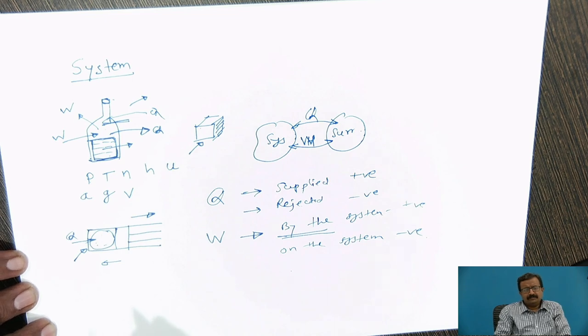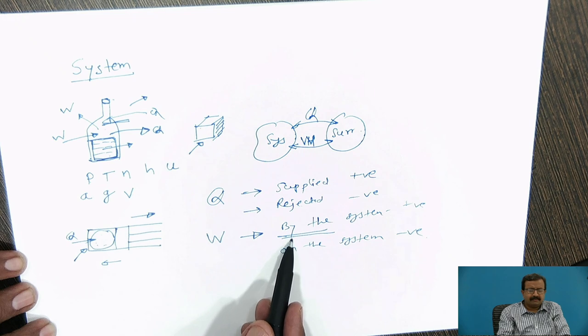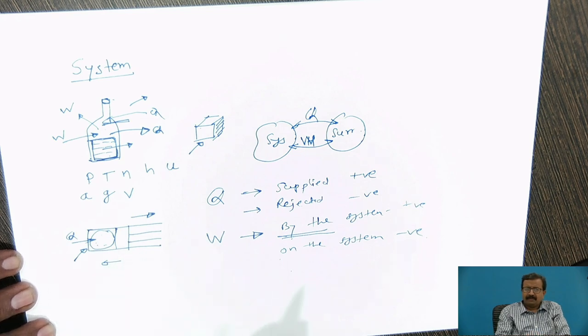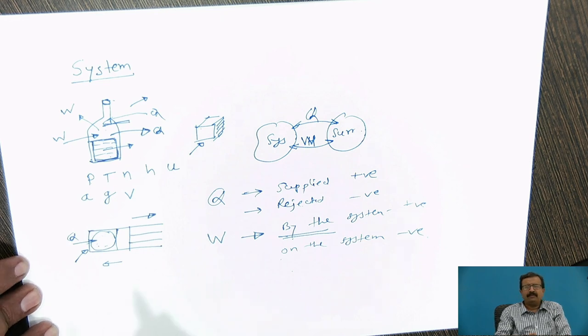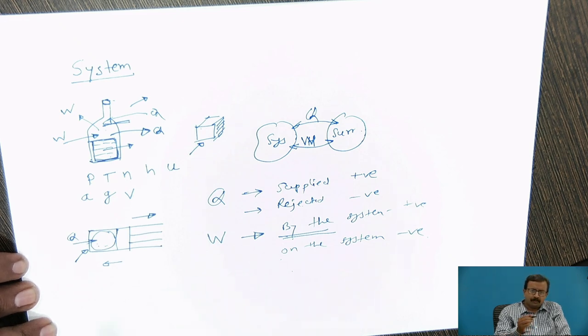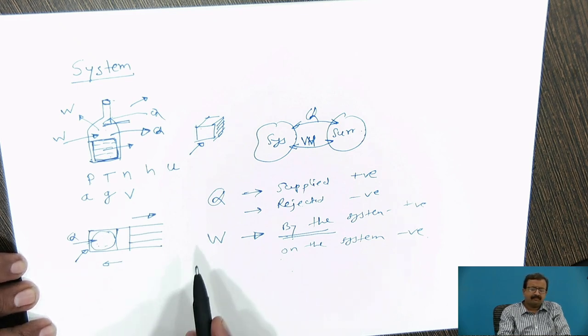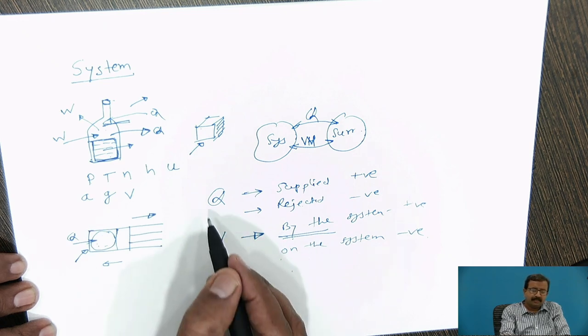You may wonder, in chemistry, it is exactly opposite. In chemistry, work done by the system is negative, and work done on the system is positive. Because, there our criteria is different. In chemistry, we have to find out how fast the reaction will take place. If I supply heat to the particular chemical, rate of reaction will be more. If I do some work on the chemical substances, there will be more completion chances. Because of this, we say that work done on the system is positive in chemistry.